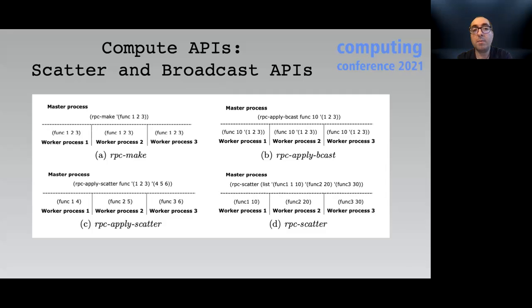The scatter API RPC apply scatter also expects a varying number of parameters. However, every parameter must be a list whose size must be the total number of worker processes. In this case, the scatter API sends the ith element of the list to the ith worker process in the parameter list, allowing users to run the same function with different parameters.